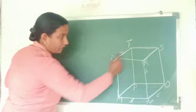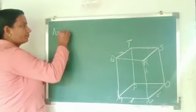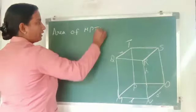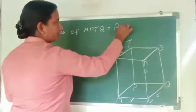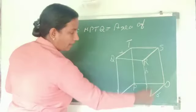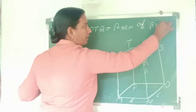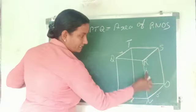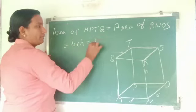Next, we can find the area of MPTQ. Area of MPTQ is also equal to area of RNOS. That is equal to breadth B into height H, which equals BH.